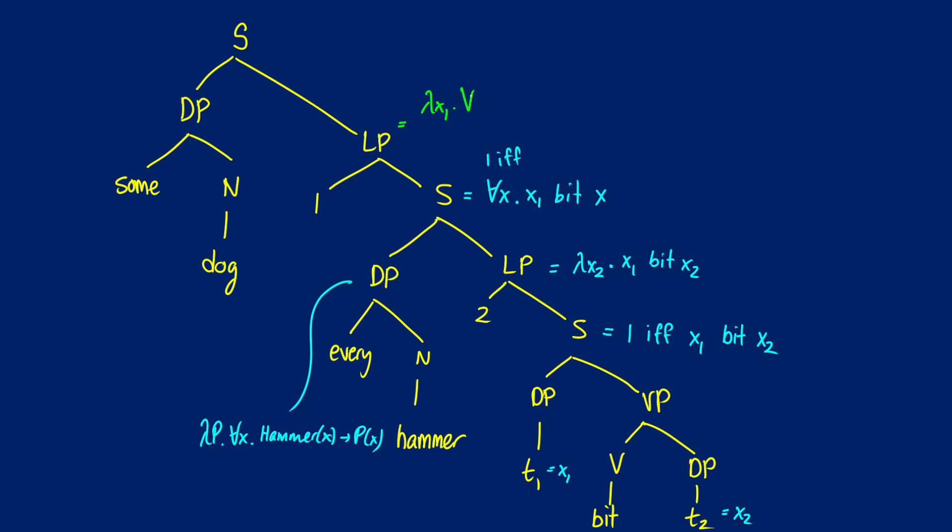We have to remember to have our all X out front. So lambda X1 for all X, X1 bit X. It does look a little bit messy, so maybe we should be choosing Y's here, but that's fine.